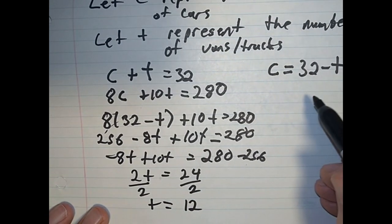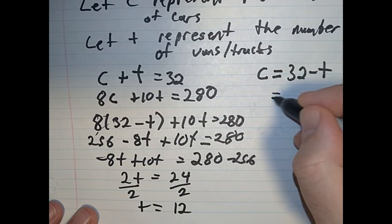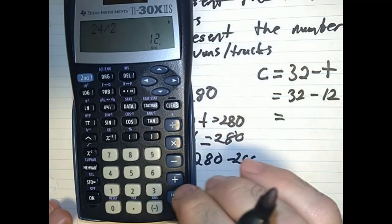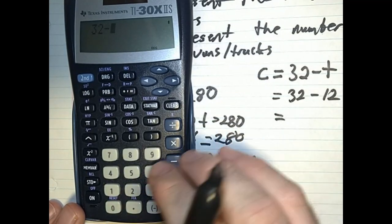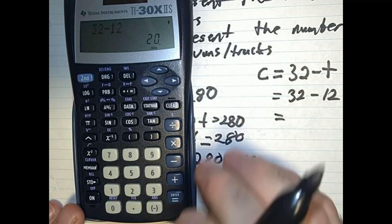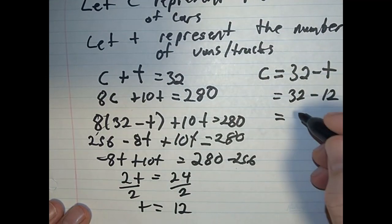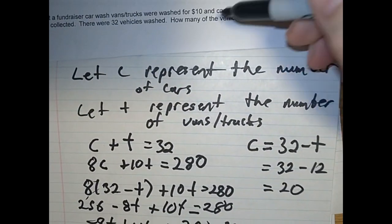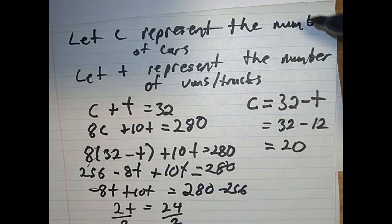Let's put 32 minus 12 here. 32 minus 12. And 20 cars. And the question asks, how many of the vehicles were cars? 20.